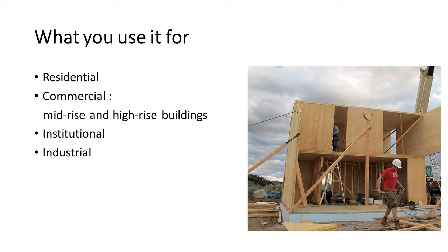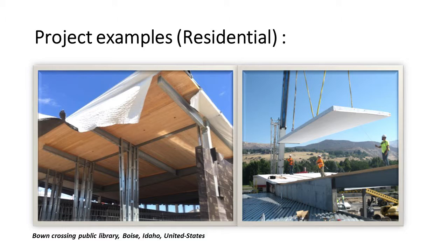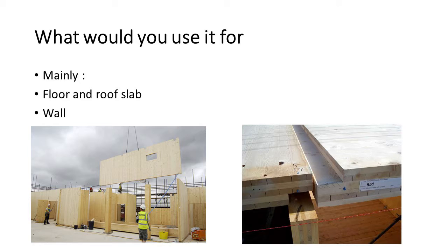A residential example project is the Garlic Residence in Auroville, Washington State, USA. An institutional example from Boise, Idaho is the Brown Classic Public Library. CLT panels are mainly used for floor and roof slabs, such as two-way slabs, and also for walls to redistribute forces such as shear and wind.